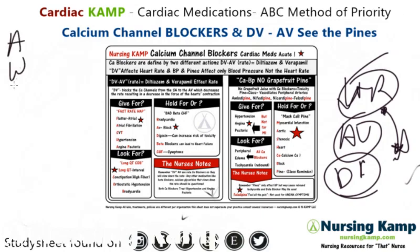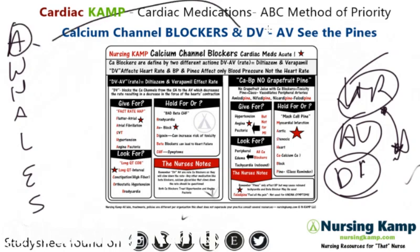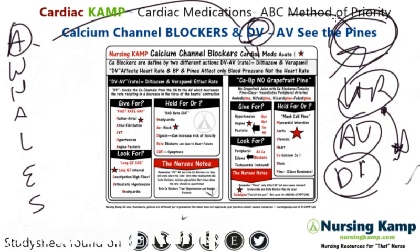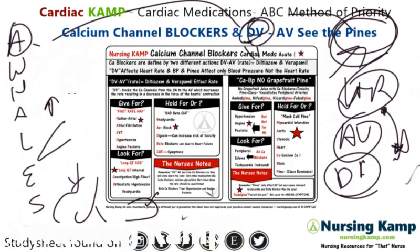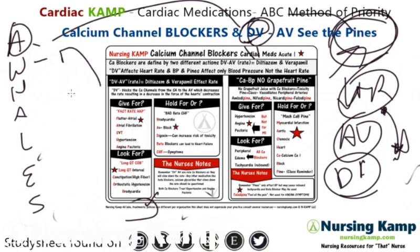Let's run through the AWALS framework to evaluate this medication. Is it acute or chronic? There's a differentiation: DV — diltiazem and verapamil — are more acute than amlodipine. For patients with peripheral vascular disease or increased afterload, we often use calcium channel blockers. How does it work? Calcium channel blocking slows contraction and conduction. When do we hold? For DV, hold if they're on beta blockers or digoxin, heart rate less than 60, or systolic blood pressure less than 90 — but follow your policy and procedure.